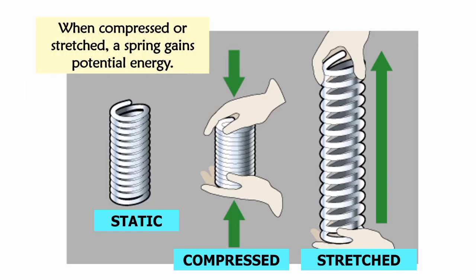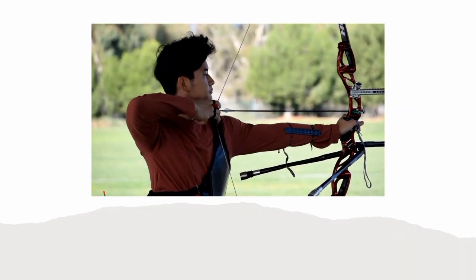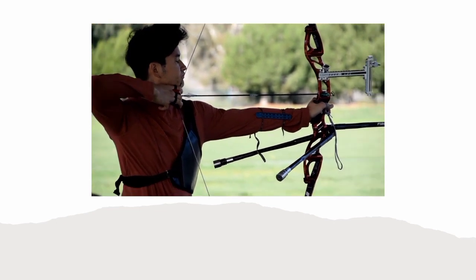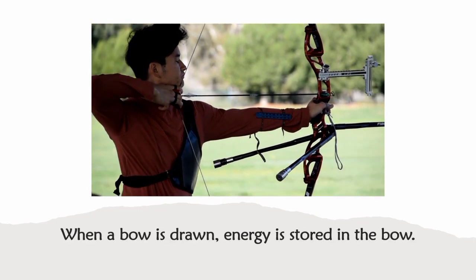Examples: a compressed or stretched spring has the potential for doing work. Or, when a bow is drawn, energy is stored in the bow. The bow can do work on the arrow.